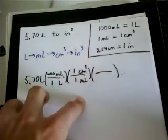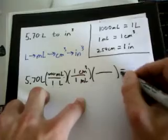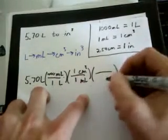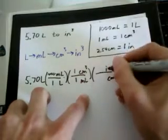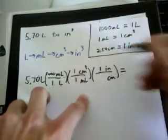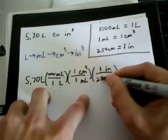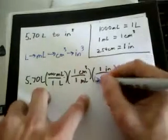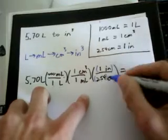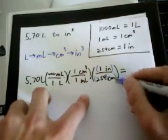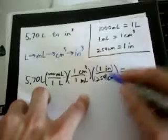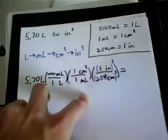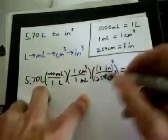So centimeters on the bottom, inches on top. We know that one inch is equal to 2.54 centimeters, but now we have to cube both of them. Remember, you want to cube the unit and the number.